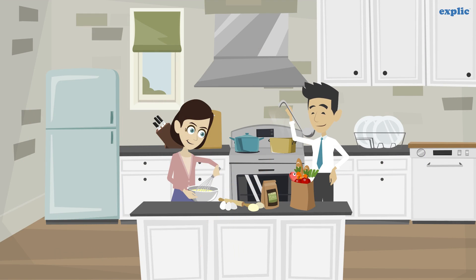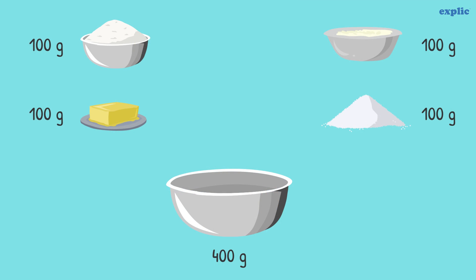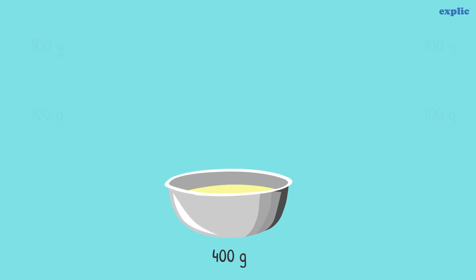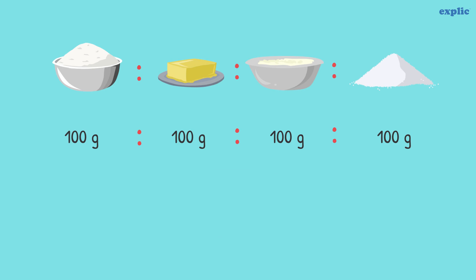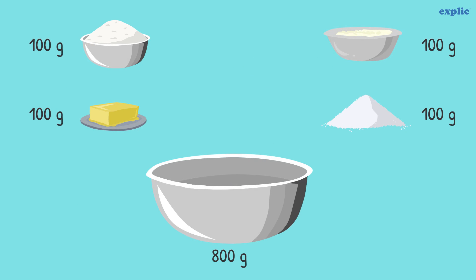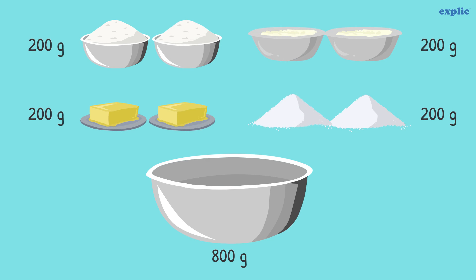We use proportion while cooking as well. To make a 400g cake, we need 100g each of sugar, butter, curd, and flour. Therefore, the ratio of sugar, butter, curd, and flour is 1:1:1:1. To make an 800g cake, since the weight of the cake has doubled, the weight of the ingredients will also be doubled to maintain the same proportion.